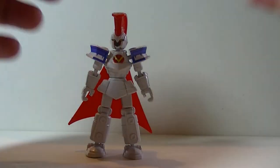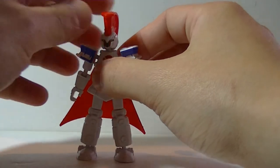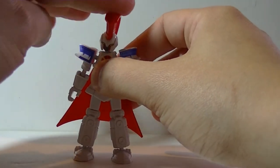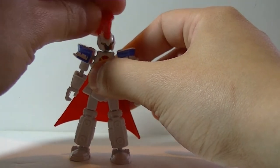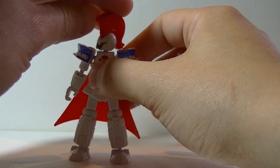Articulation. His head is ball jointed. It can tilt to the side and turn. There's nothing getting in its way.